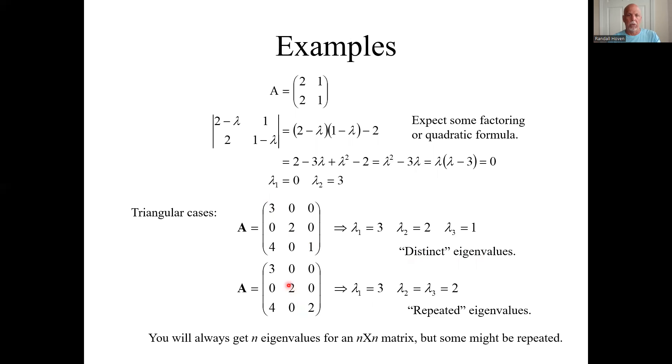Here's another triangular case, but we have three, two, and two. You still call that three eigenvalues, but one of them is repeated, or repeated eigenvalues. So you don't just say it only has two eigenvalues. If it's n by n, it's going to have n eigenvalues. Some might be repeated.